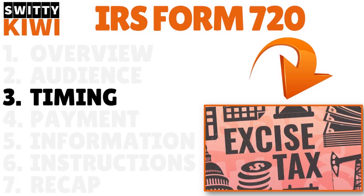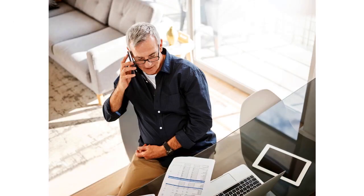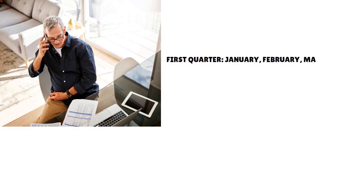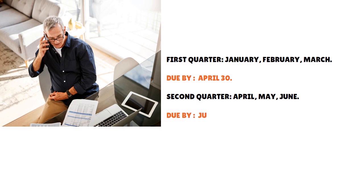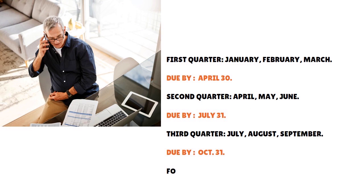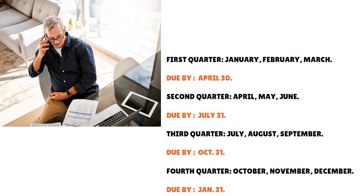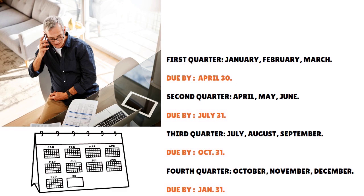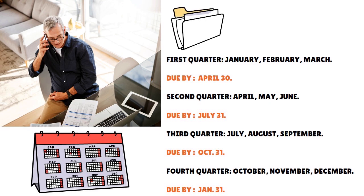When do you have to fill out Form 720? You need to fill it out every quarter. Here are the deadlines: Q1 (January–March) is due by April 30th; Q2 (April–June) is due by July 31st; Q3 (July–September) is due by October 31st; and Q4 (October–December) is due by January 31st. If the due date falls on a weekend or legal holiday, you can file by the next business day.